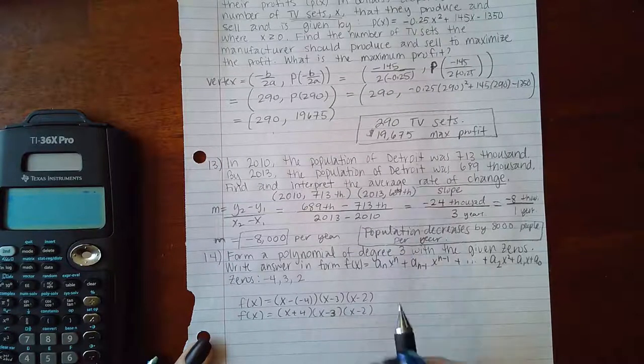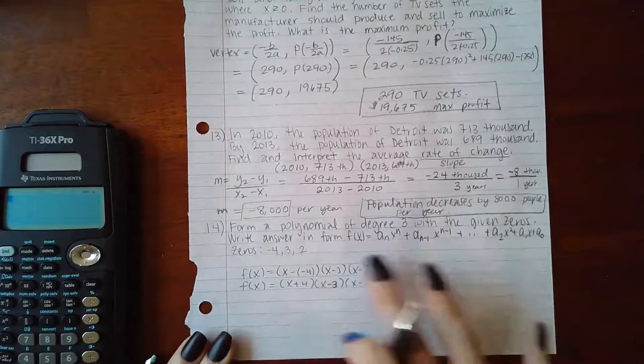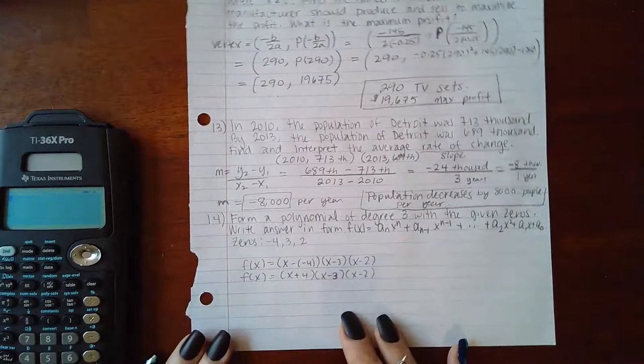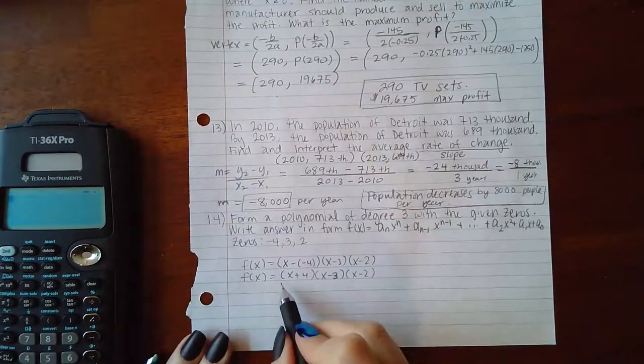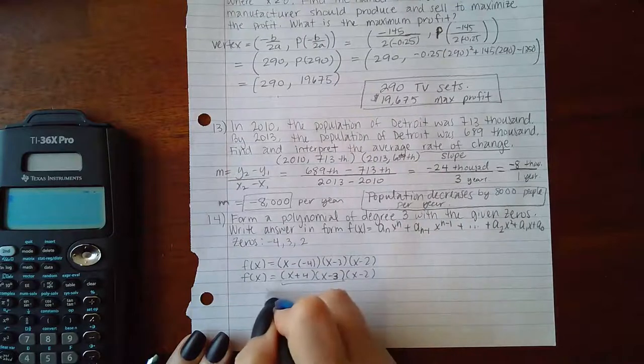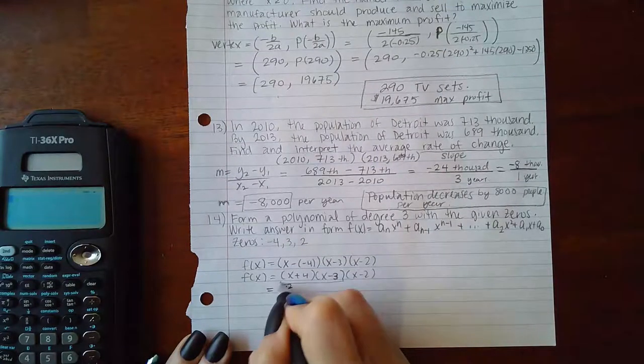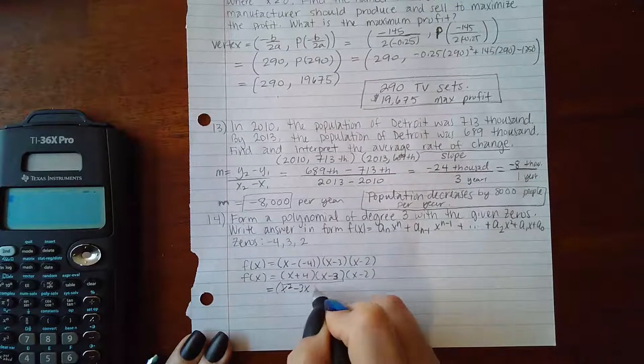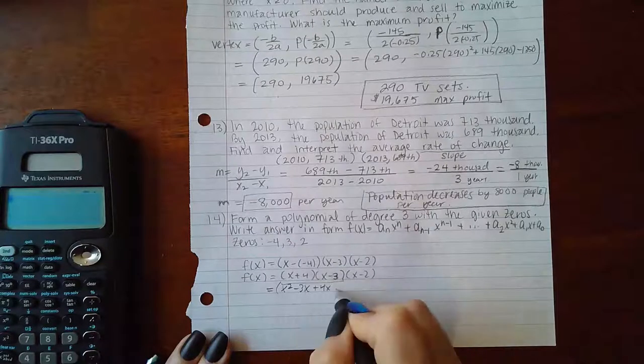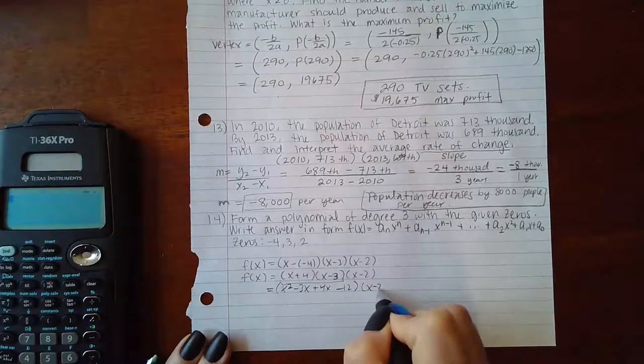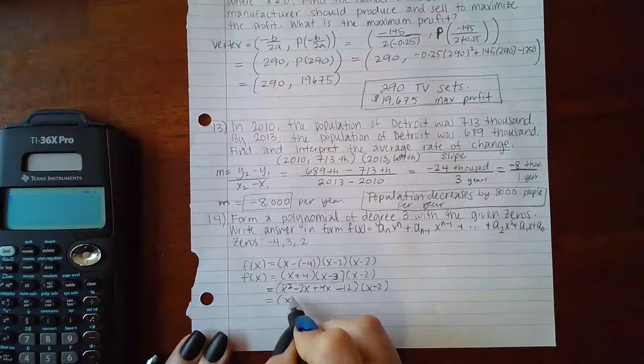Now it's just a matter of multiplying these out to get the expanded form. I'm going to multiply these two together. I get x² - 3x + 4x - 12. I'll simplify that before I multiply by (x-2).